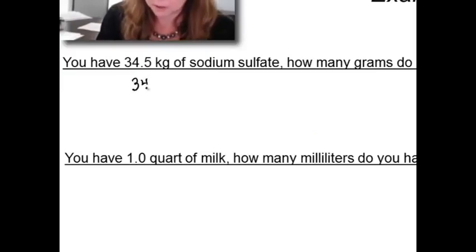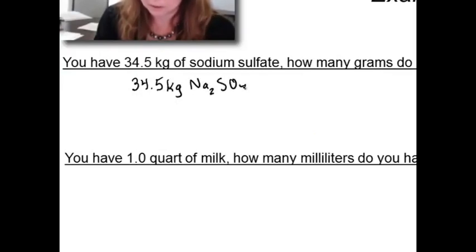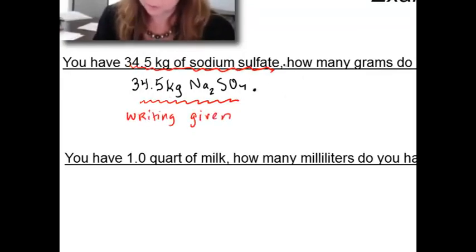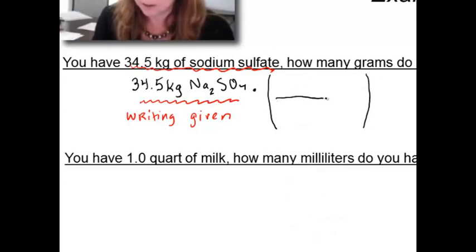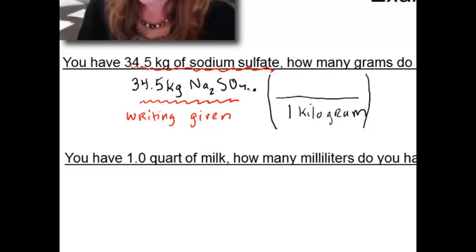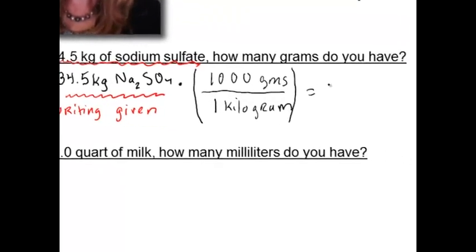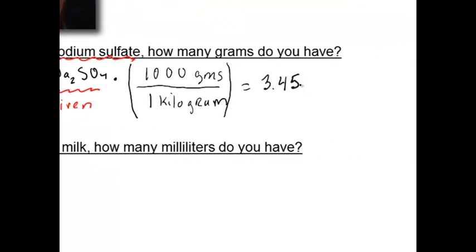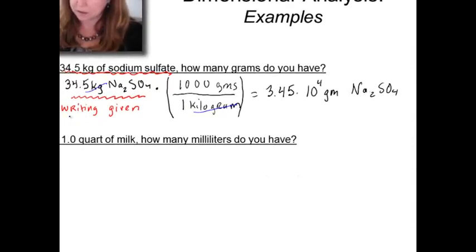You always write down your given. If you don't know anything else to do, write down your given. So we have 34.5 kg of sodium sulfate. Now we're going to multiply it by a conversion factor. This is where you have to remember what the conversion between kilograms and grams is. A kilogram is a thousand grams. You multiply all that out, and you get an answer, which is 34.5 times a thousand. We like to use scientific notation when reporting answers, so this is the best way to write it: 3.45 × 10^4 grams. We're canceling units, writing the given, and converting from kilograms to grams in a really structured way.